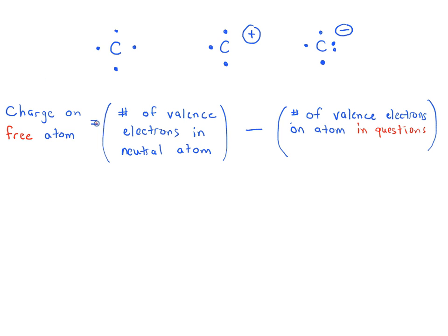In organic chemistry it's extremely rare to deal with carbon not bonded to anything else. The vast majority of the time you're dealing with situations where carbon is bonded to other atoms — for example, carbon can bond with four hydrogen atoms to form CH4, or methane. The question is how do we calculate the charge on each atom when they're sharing electrons, not holding them all themselves?